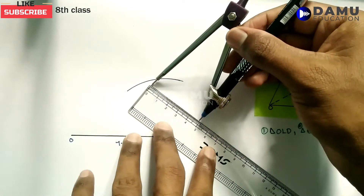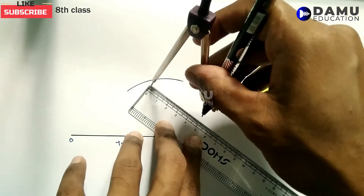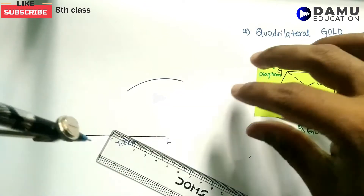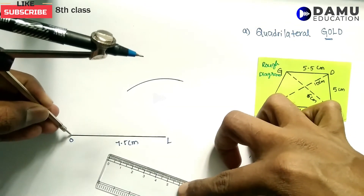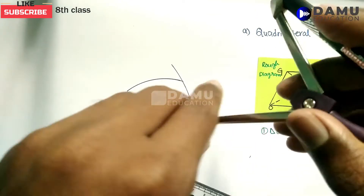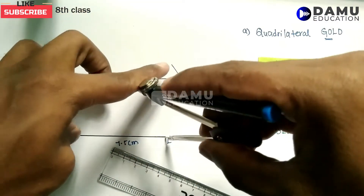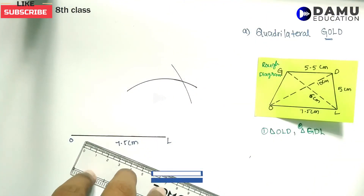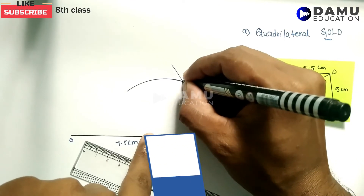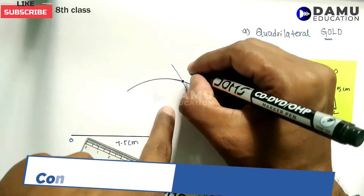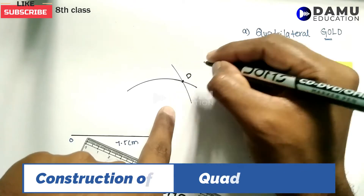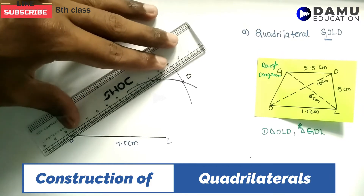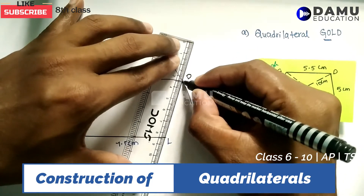Now from O, take 10 cm — that is OD = 10 cm. With O as center, draw one arc with radius 10 cm. Where these two arcs coincide — the 5 cm arc from L and the 10 cm arc from O — that intersection point is D. Now join L to D.